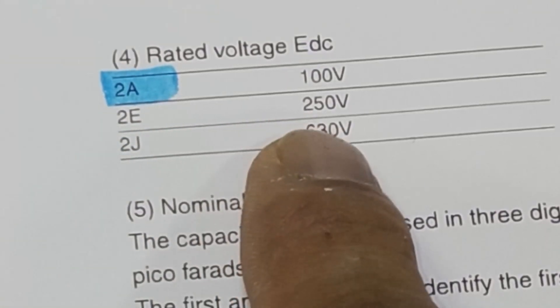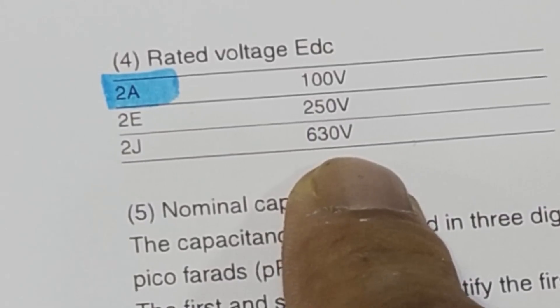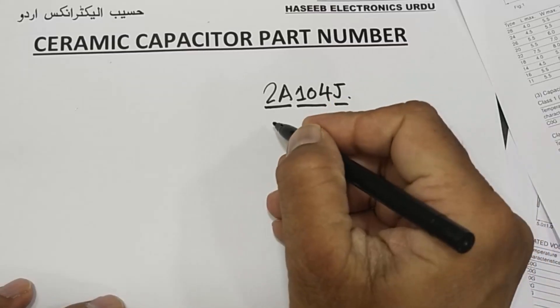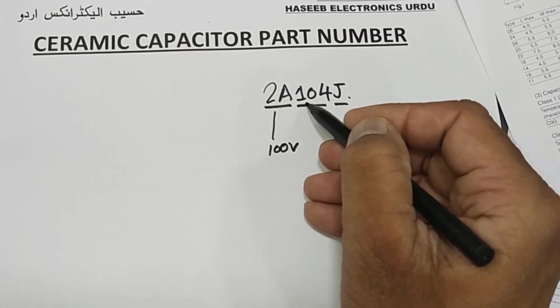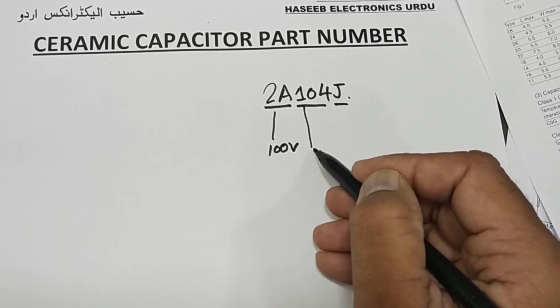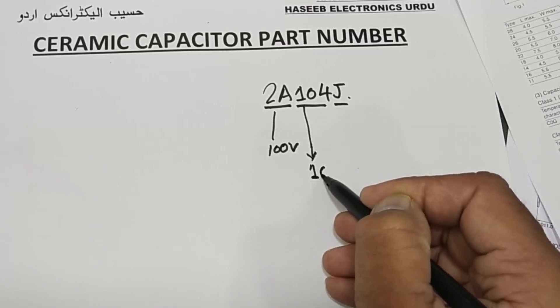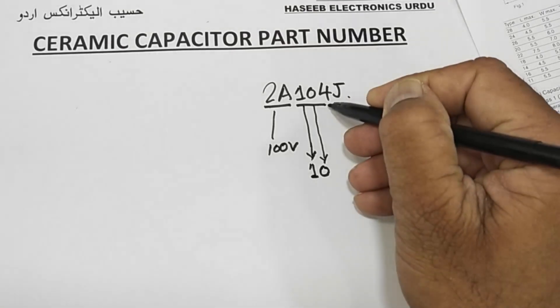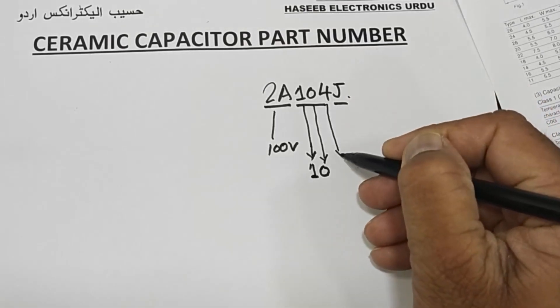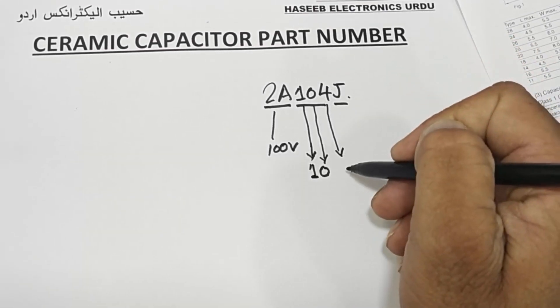For the voltage code: 2A means 100 volts. If it is 2E, that is 250 volts. If it is 2J, that is 630 volts. So in our case, 2A = 100 volts.